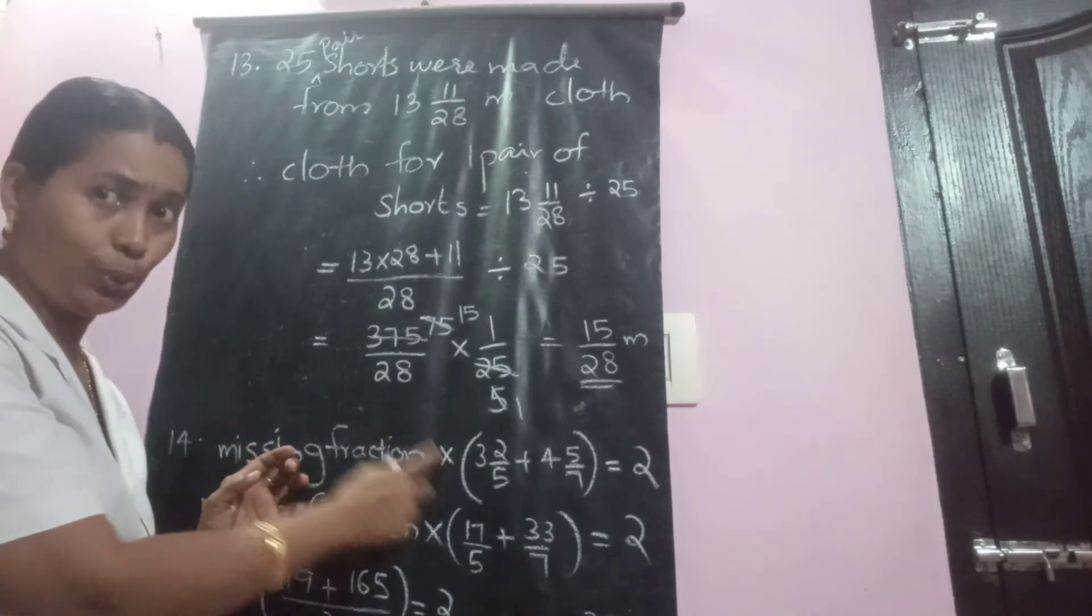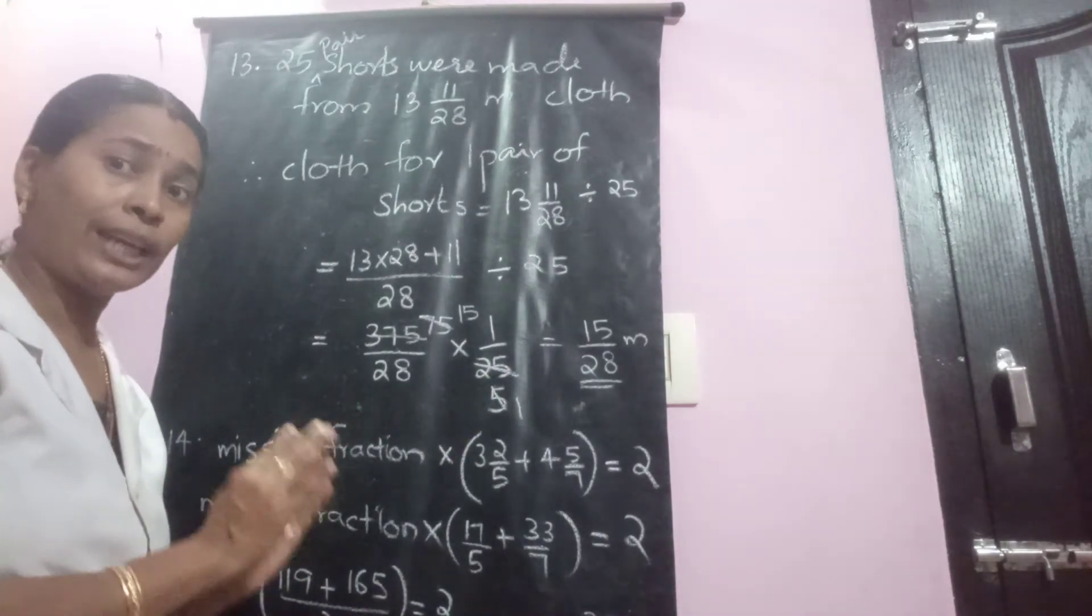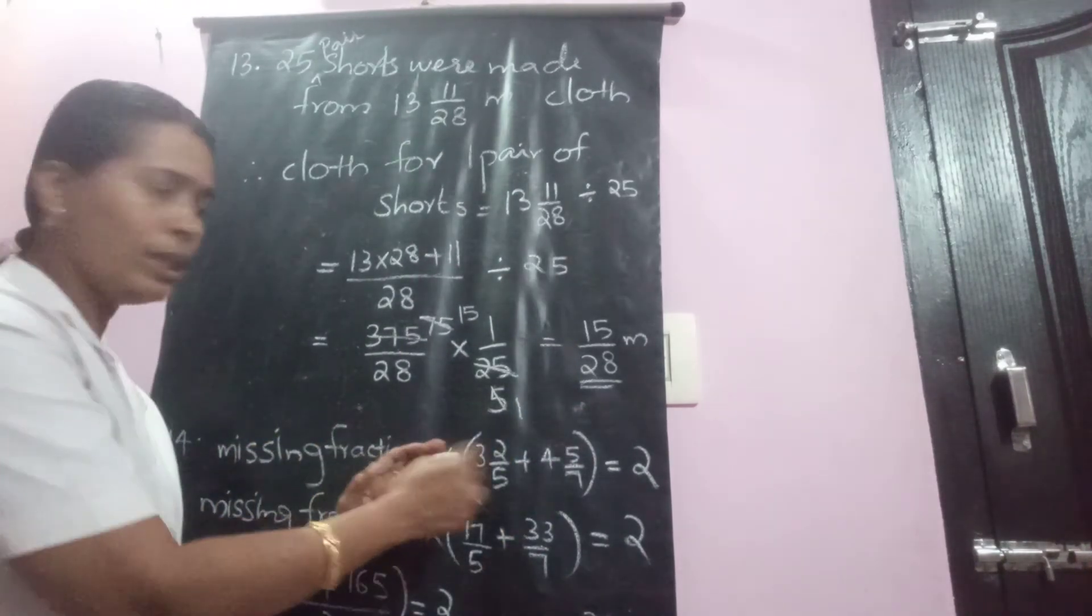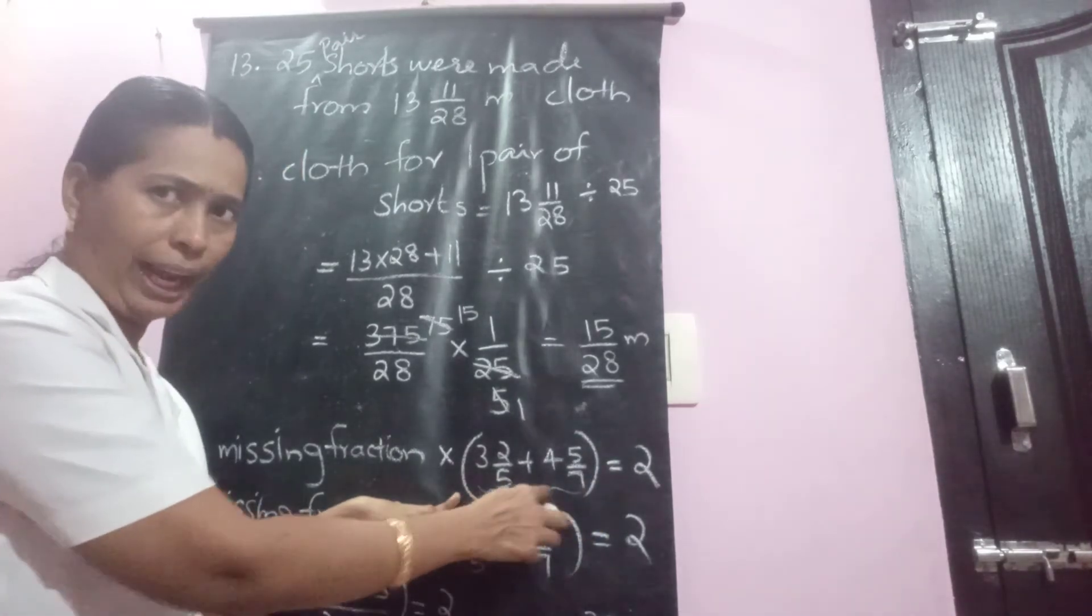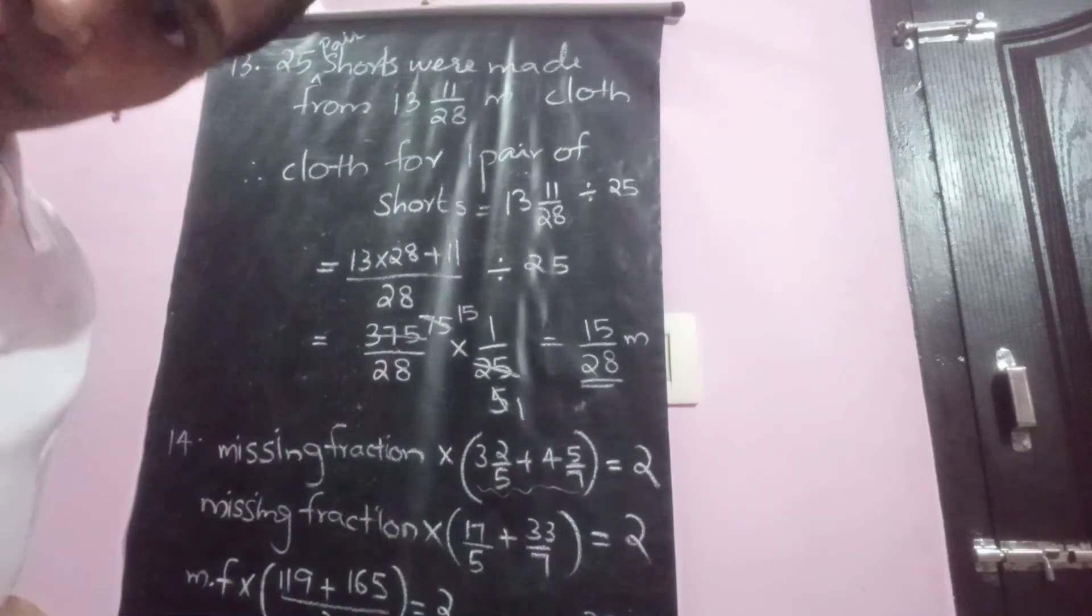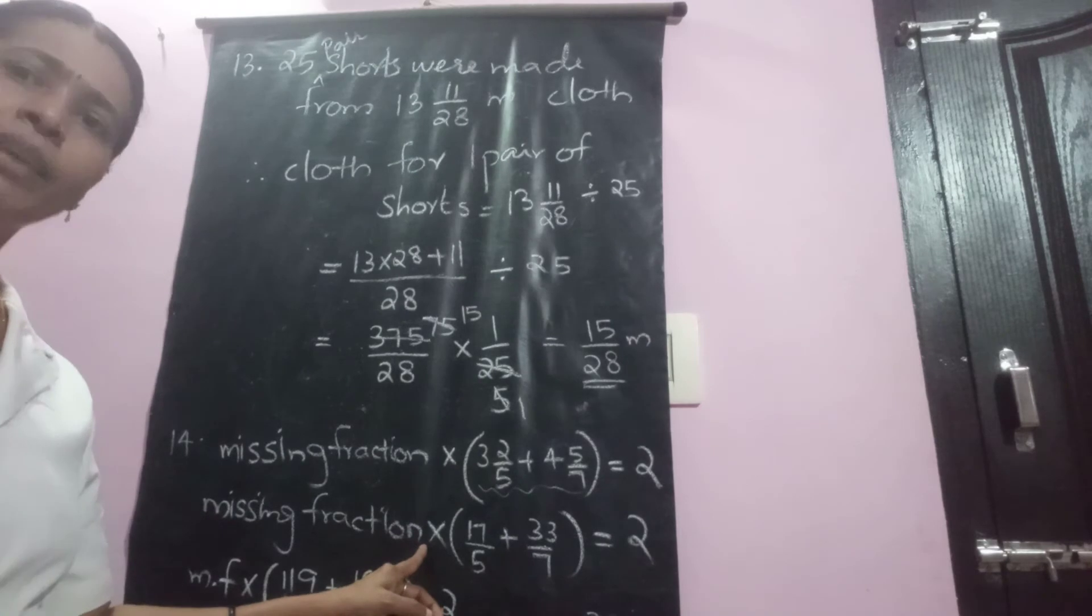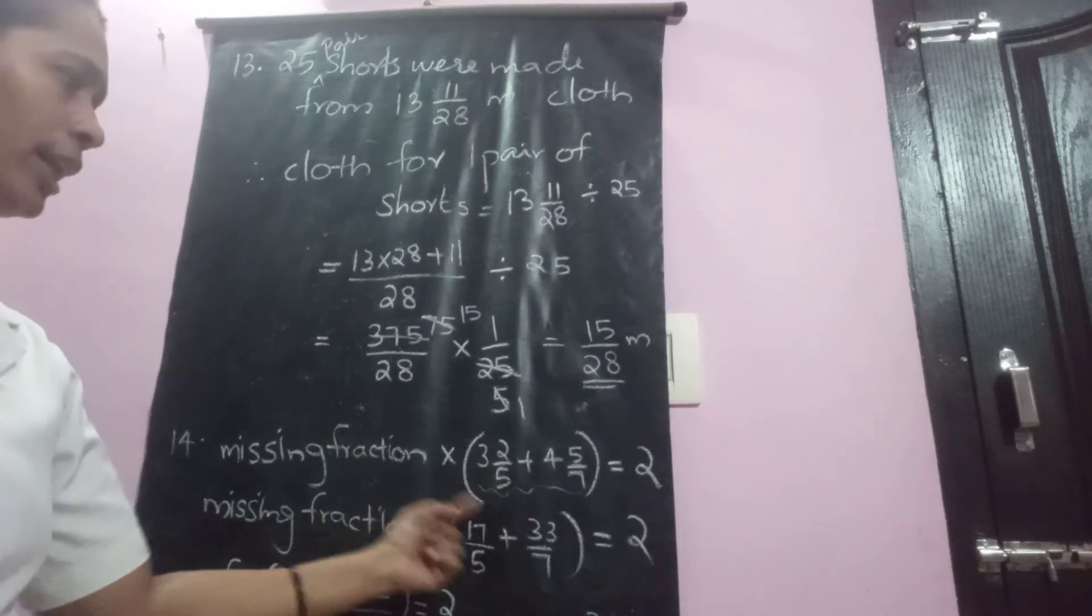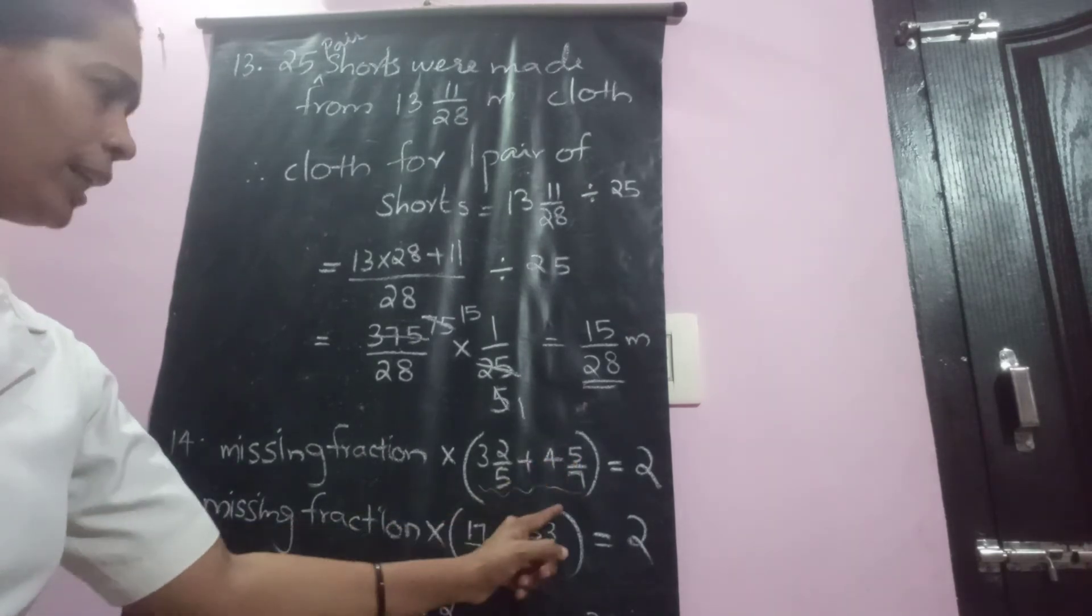In the second line they told you that the relation between the missing fraction and some other numbers is given. What is the relation? Missing fraction into sum of 2 numbers already given in the question, sum of 2 fractions is equal to 2 is given to us. So missing fraction into what? Sum of these 2 we have to find. For that convert it into mixed fraction: 17 by 5 and the other one become 33 by 7.